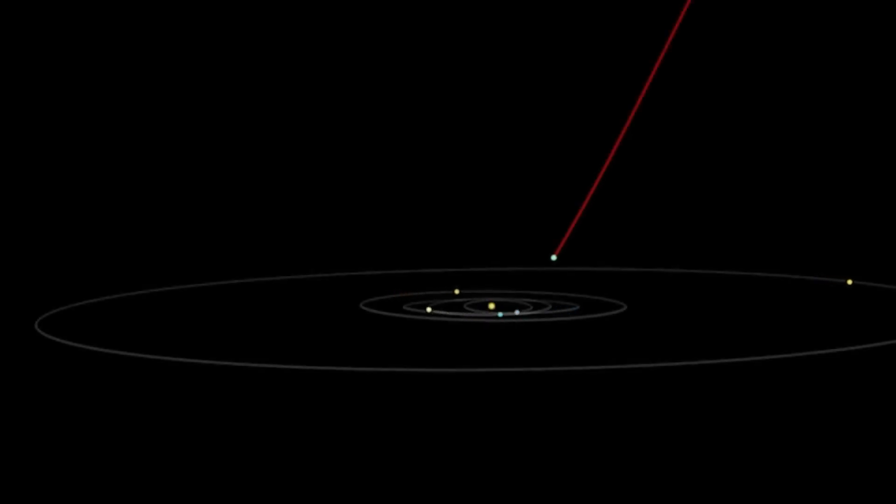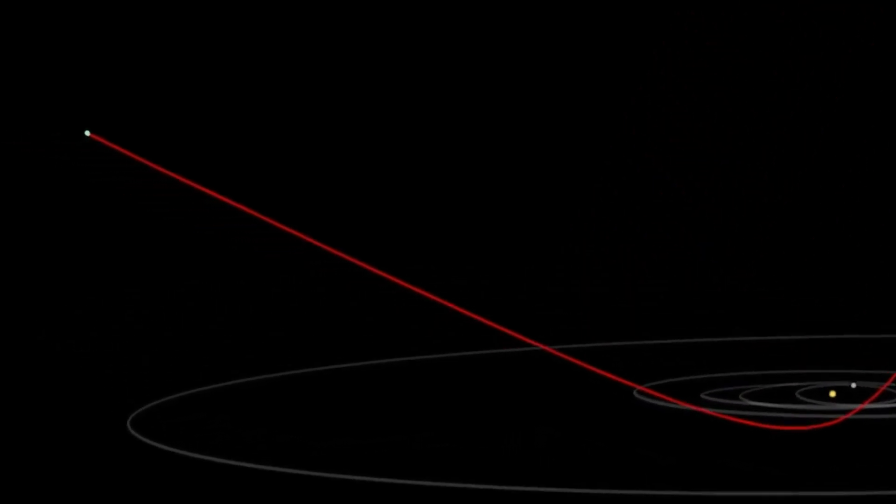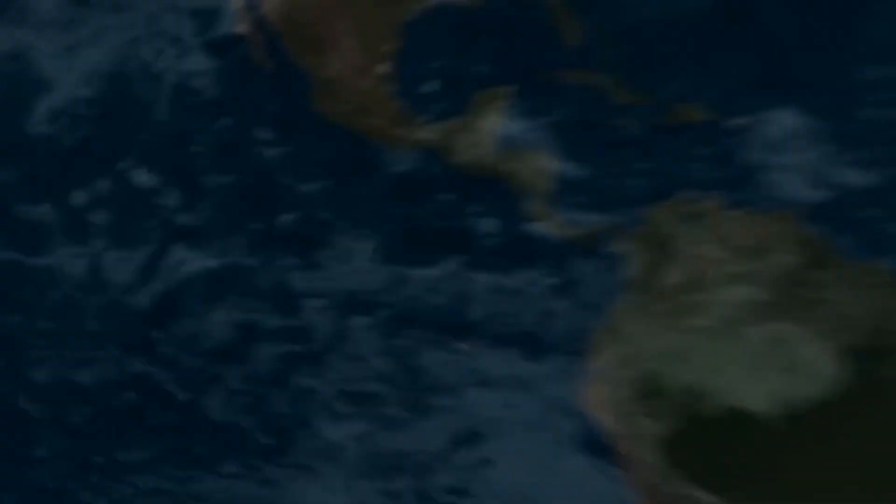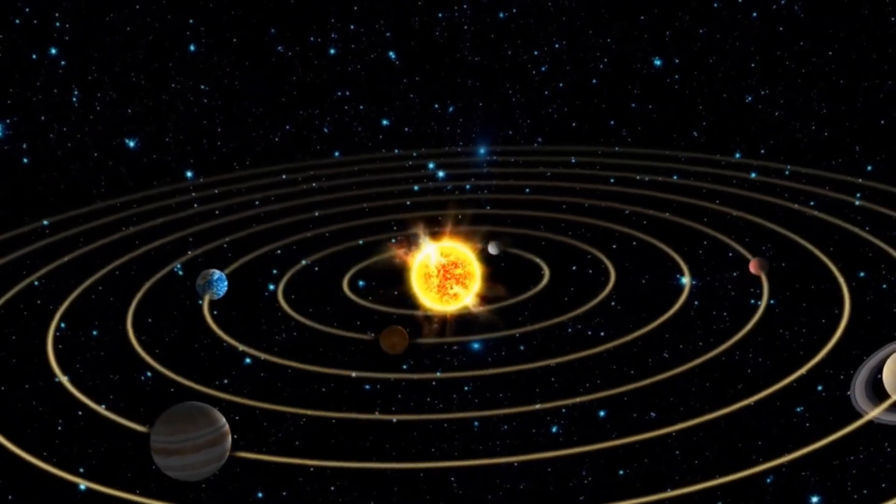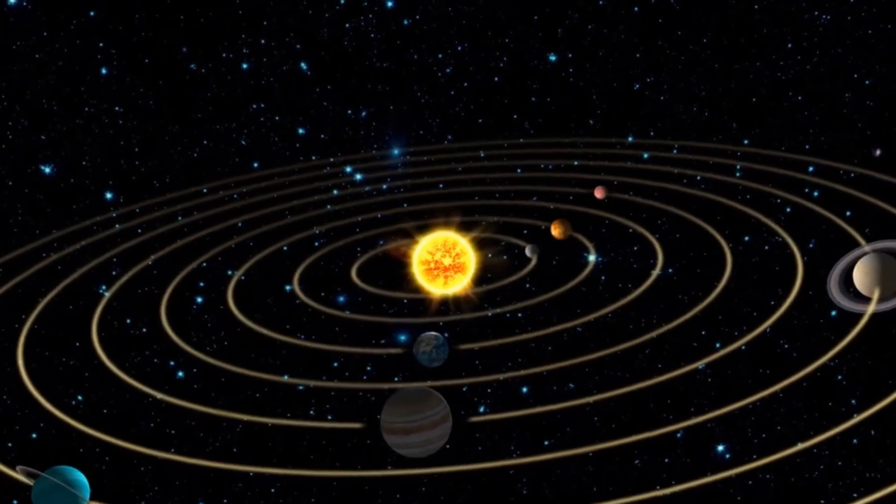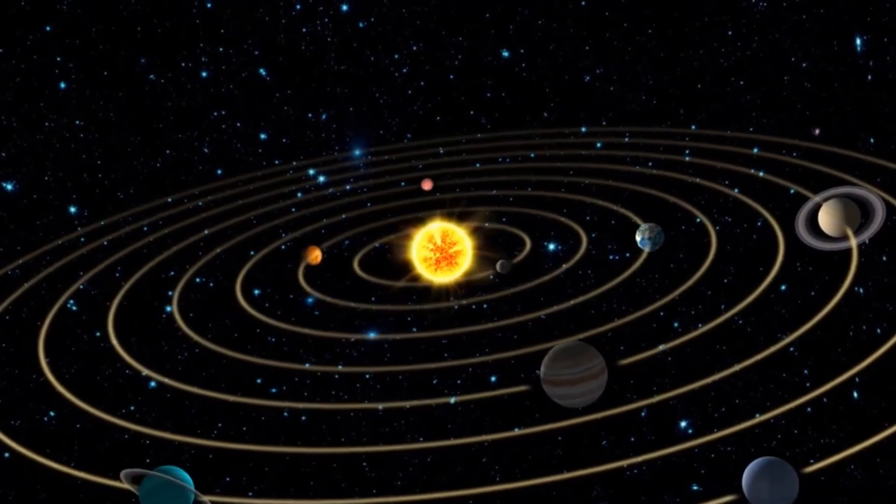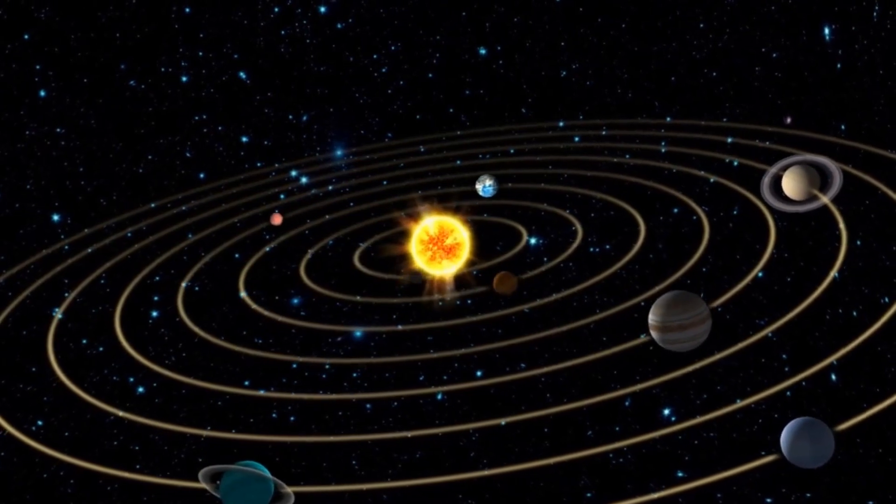Each comet that traverses our solar system experiences an acceleration as it moves away from the sun. Firstly, during its trajectory around the opposite side of the sun, the celestial body experiences a gravitational force exerted by the sun, which imparts a propulsive effect akin to the cracking of a whip.